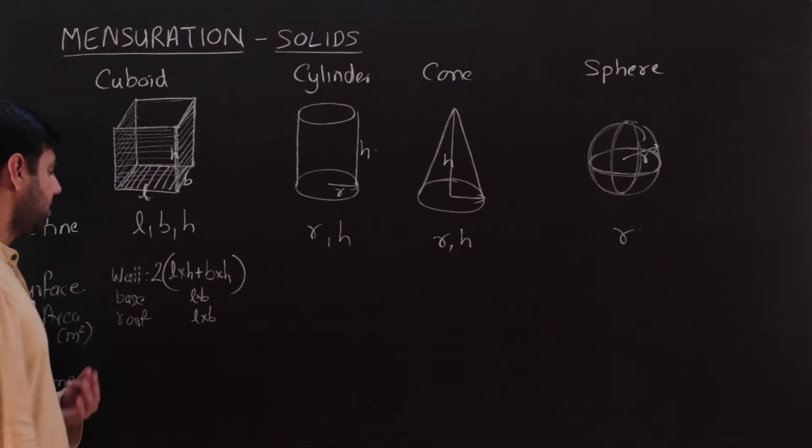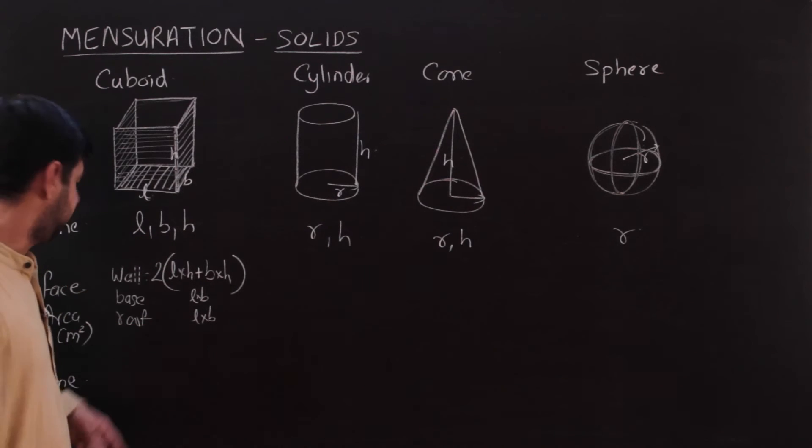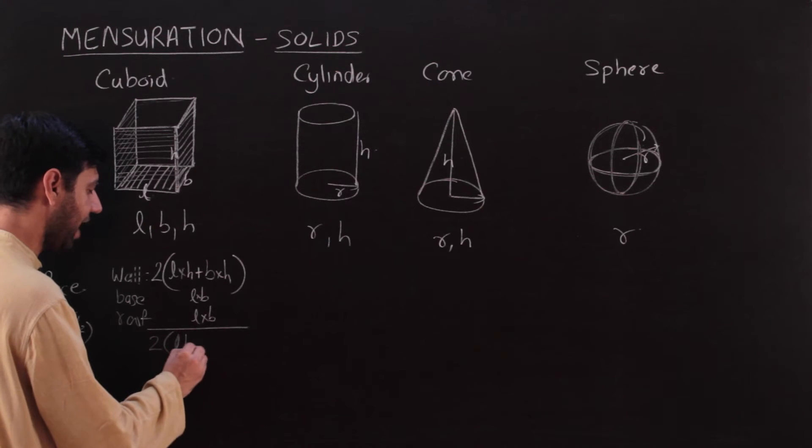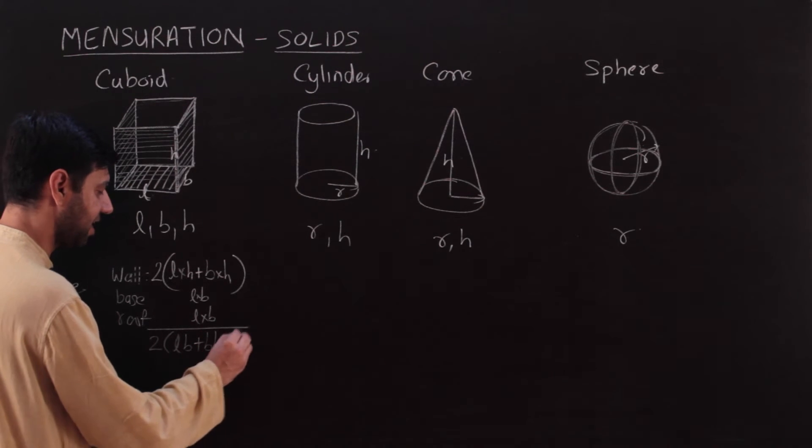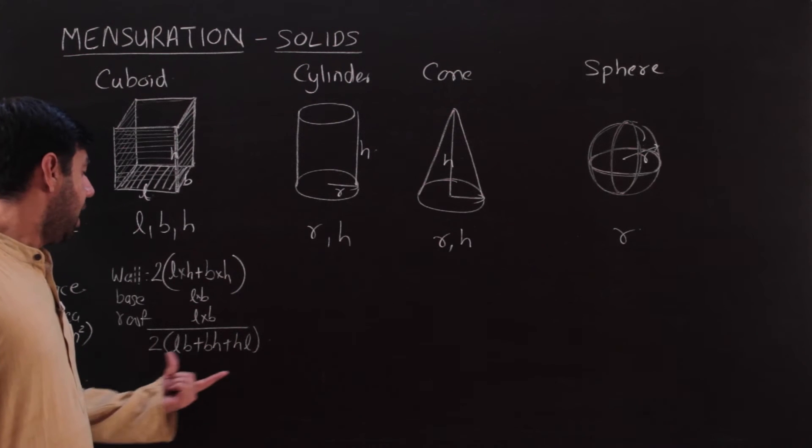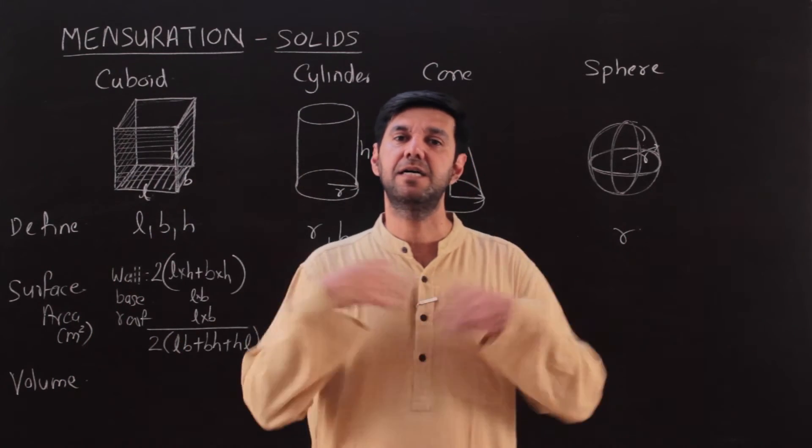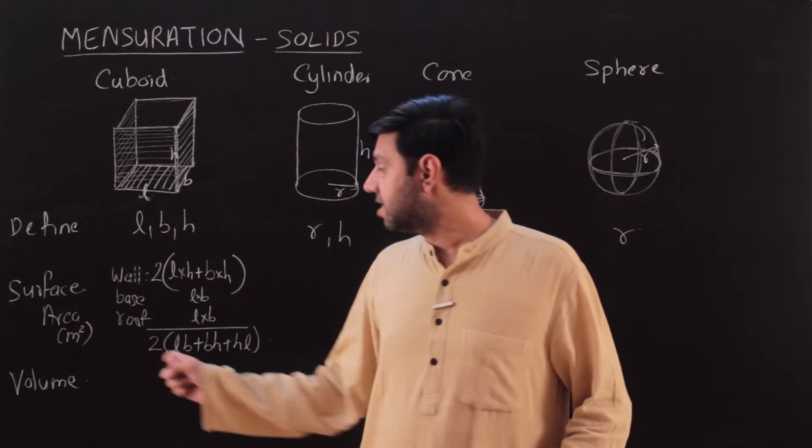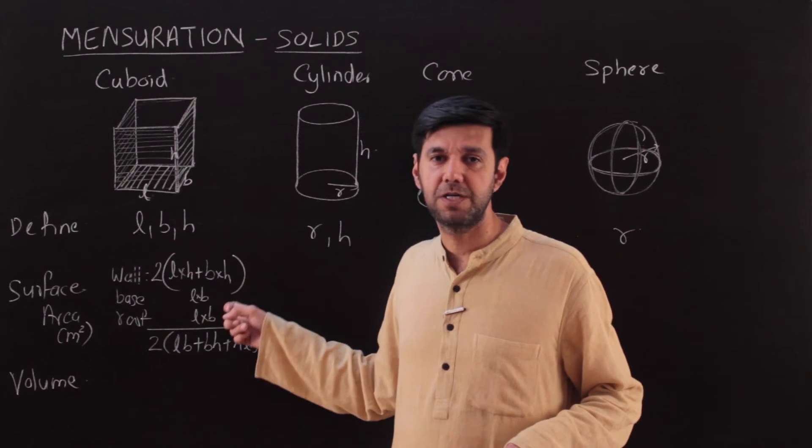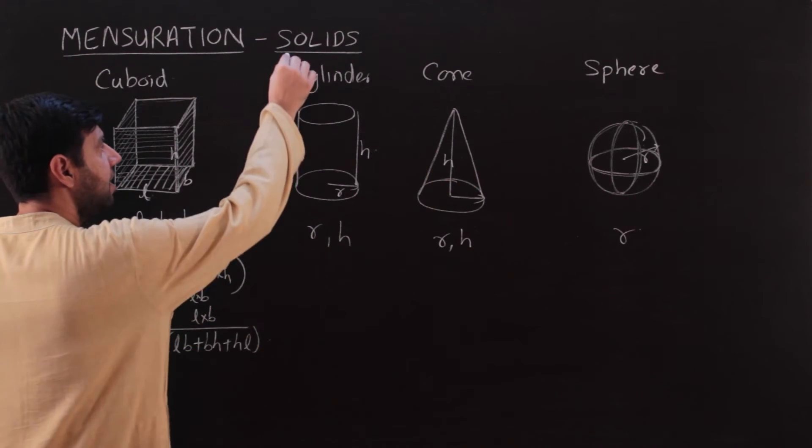This is how you get surface area. If I total them up, I get the total surface area, which is 2(lb + bh + hl). This is total. But sometimes you have questions like I want to paint a room. Obviously, you are not going to paint the floor, so it's a good idea to know the differences between them.